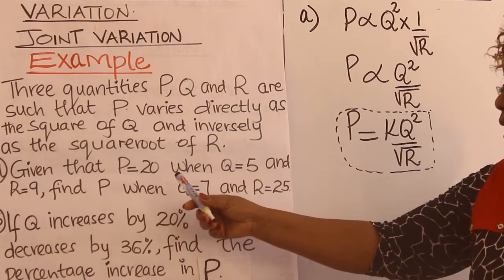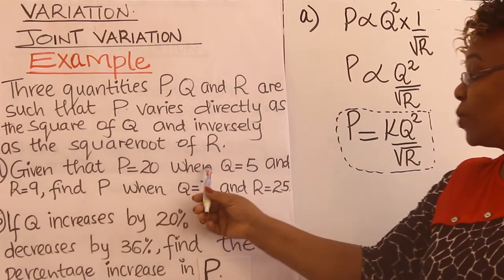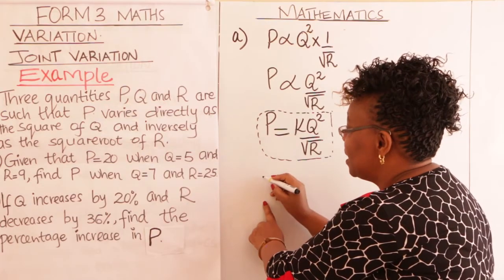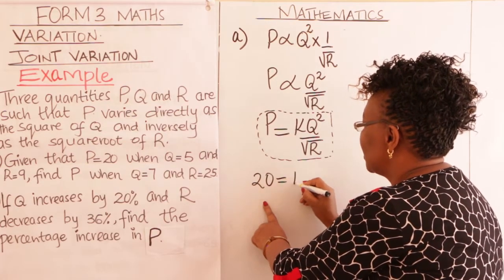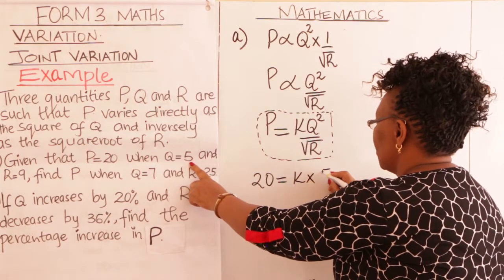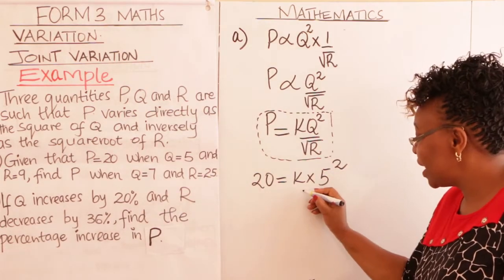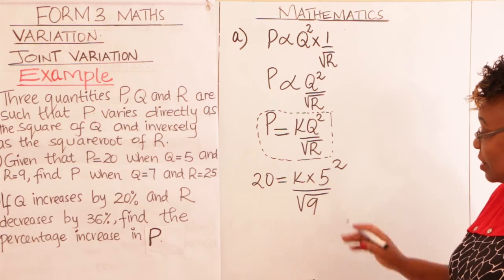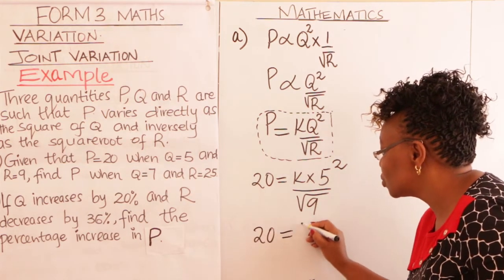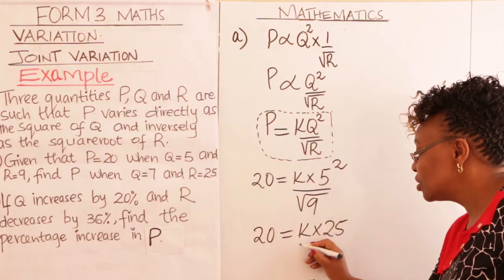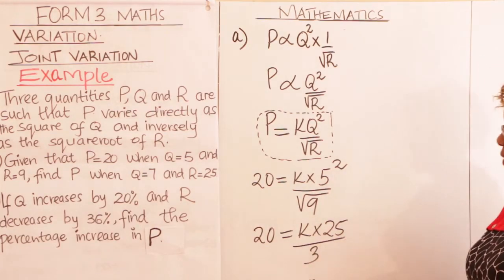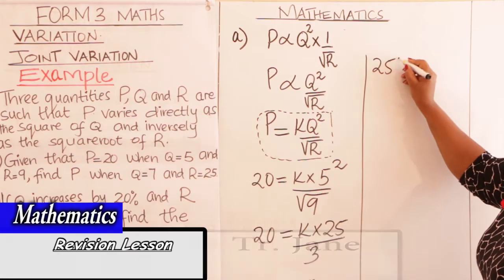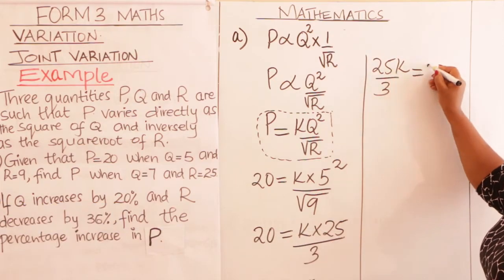You are told: given that P is 20 when Q is 5 and R is 9. Substitute — P is 20, so 20 = K × 5² divided by square root of 9. This gives us 20 = K × 25 divided by 3, which means 25K over 3 equals 20.